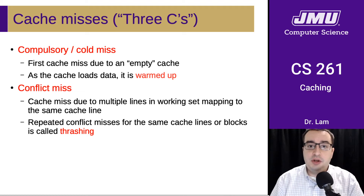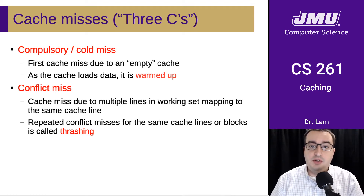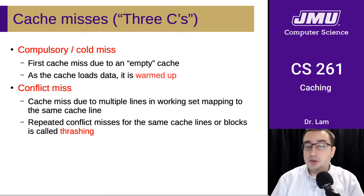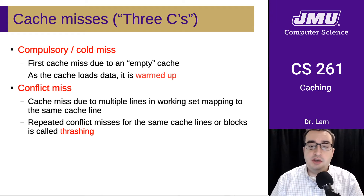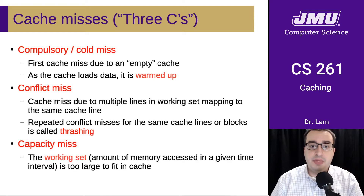If multiple addresses in the working set map to the same cache line, we're going to have conflict misses because we'll load one and then need the other. If this happens over and over again and we keep repeatedly having to get rid of one of them, this is called thrashing.